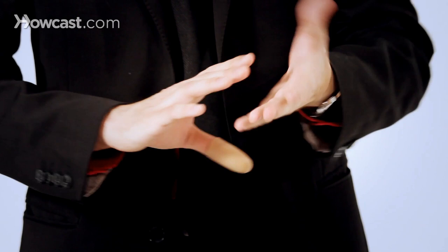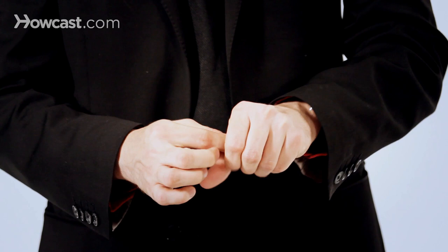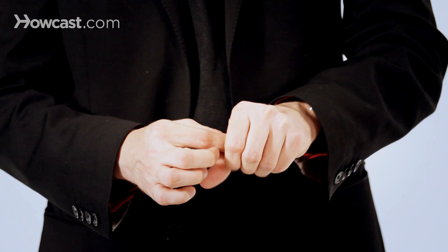When I turn my hand over, I wave this hand, taking the thumb tip off into here. So it just rotates onto the thumb, removes it as I wave. I remove the silk, and as I bring my hands together to straighten it out, I just jam the thumb tip right back on, and I extend it this way.